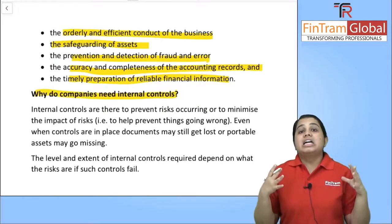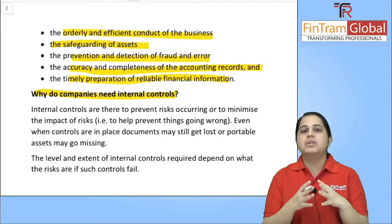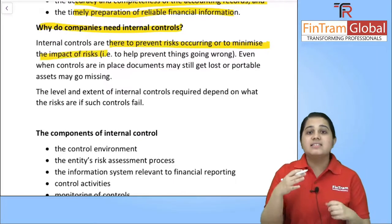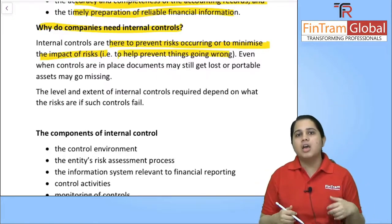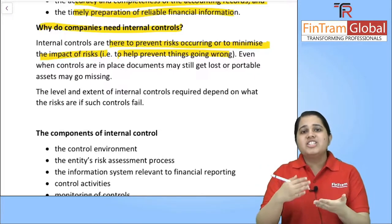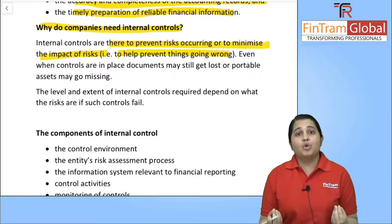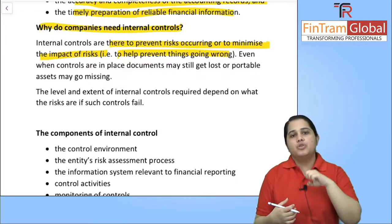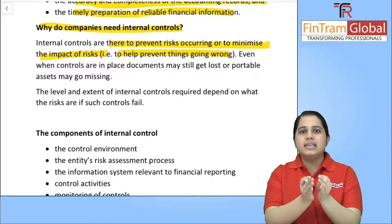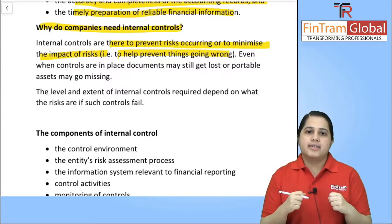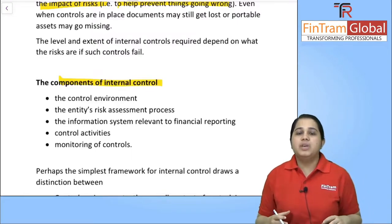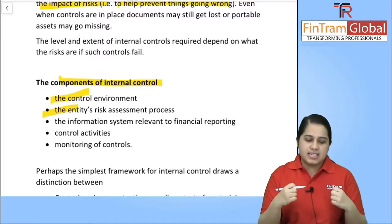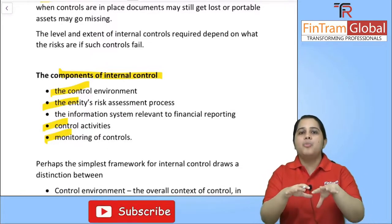Why do companies need internal control? They need to prevent any risk occurring, minimize the impact of risk, and help prevent things from going wrong. If there is no control in place, you will not know if something has gone wrong until it's too late. The components of internal control include: a control environment, control procedures, the entity's risk assessment process, control activities, and monitoring of controls.